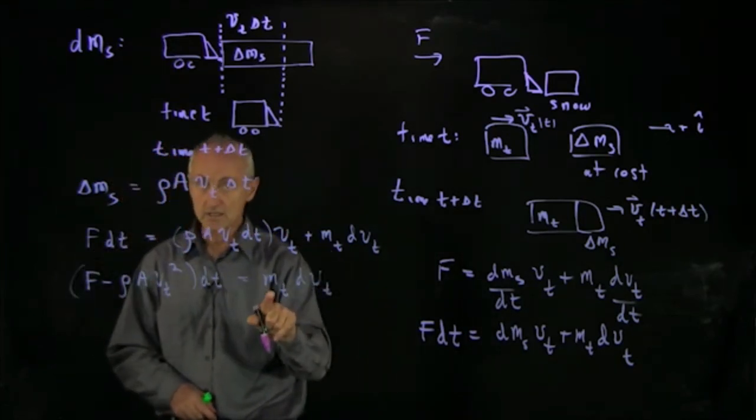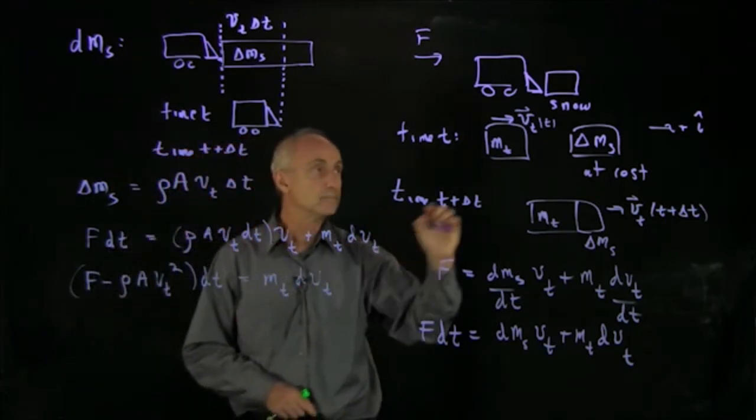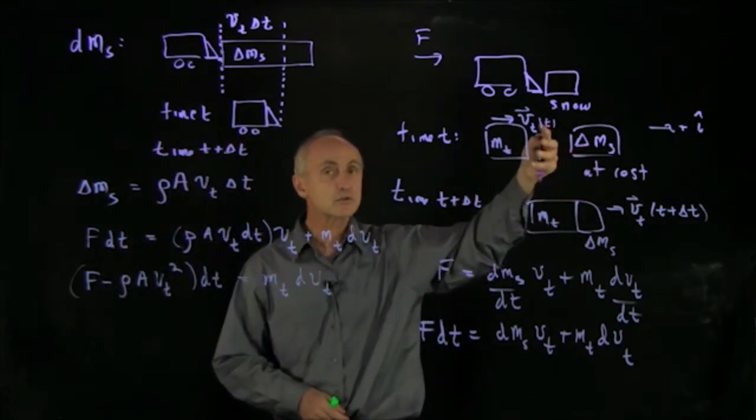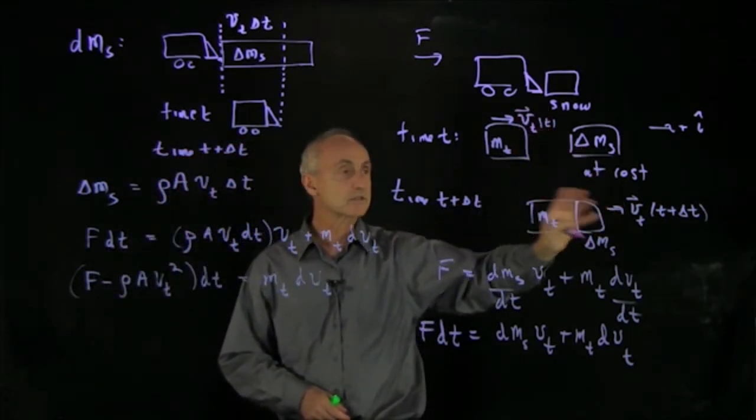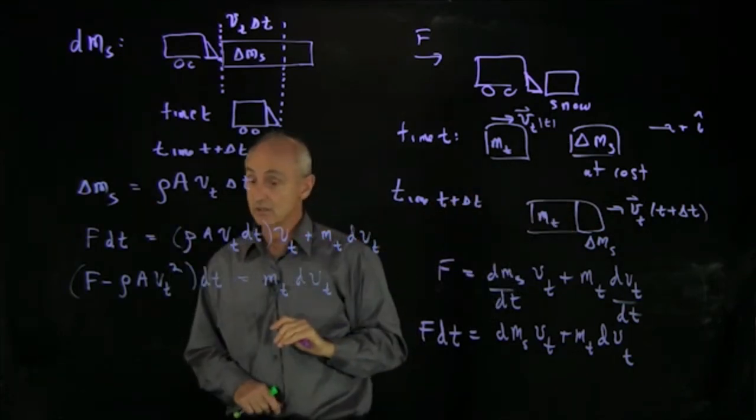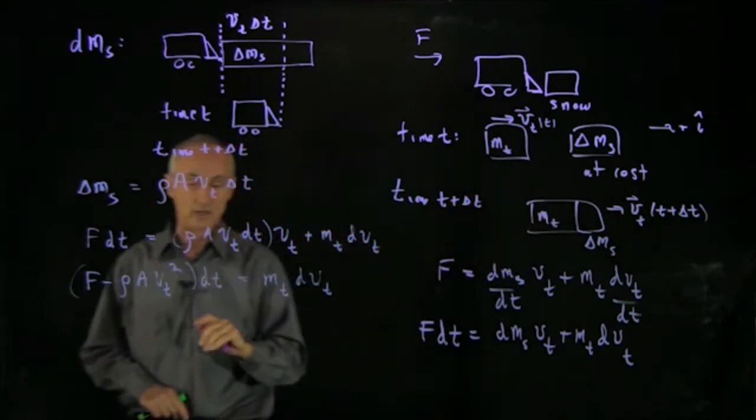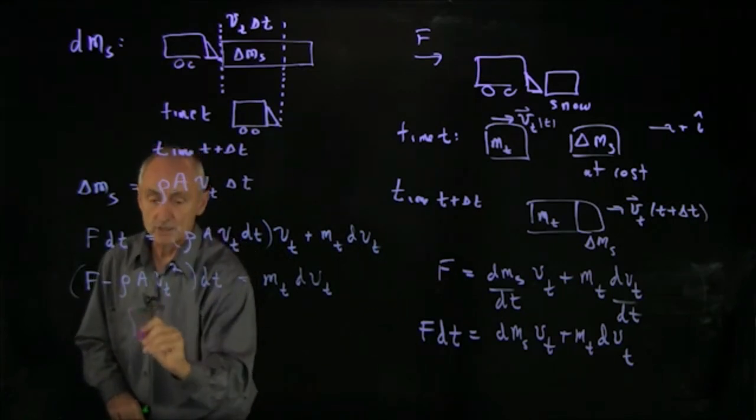And the mass of the truck in this case is fixed. Why? Because when the snow gets into the truck, at the end of this delta t time interval, it gets displaced to the side. So this is an equation that we can separate and integrate.